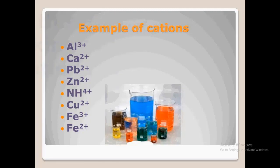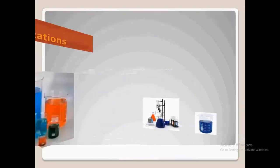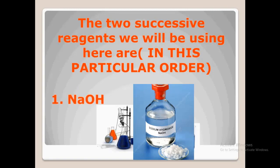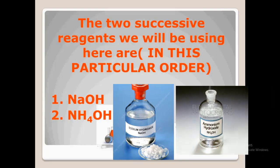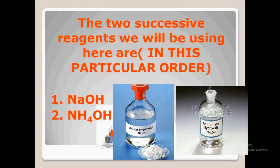Examples of cations we'll be looking at are aluminium, calcium, lead, zinc, ammonium, copper, iron 3+, and iron 2+. The two successive reagents we'll be using, in this particular order, are sodium hydroxide and ammonium hydroxide. This order is paramount — if we change the order of the reagents, then our memory tips and recall formula will no longer be valid.